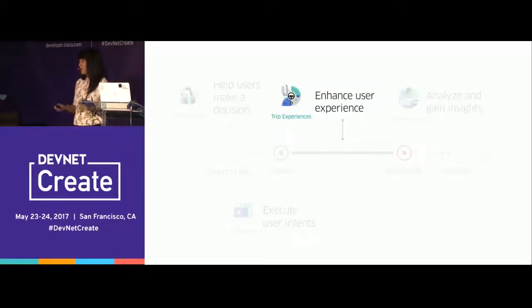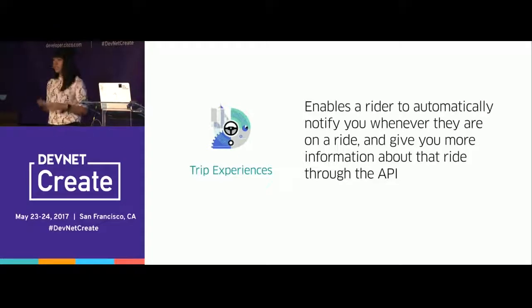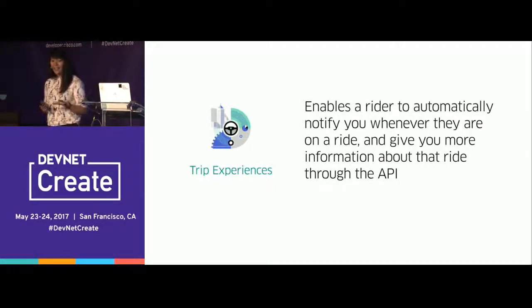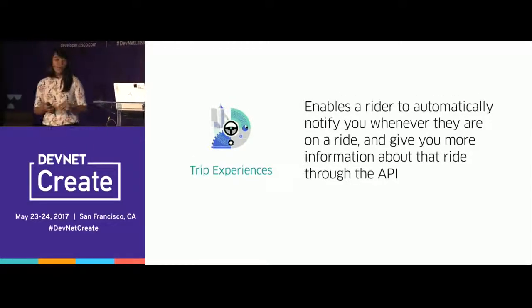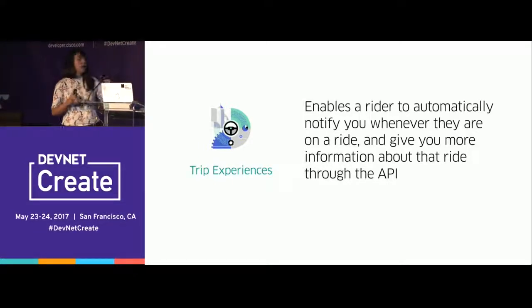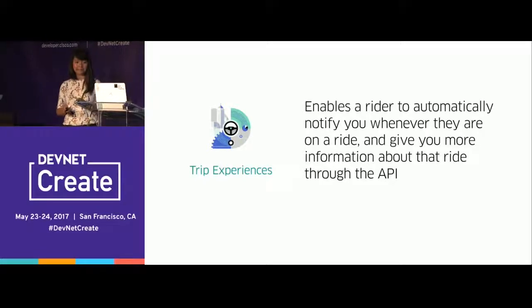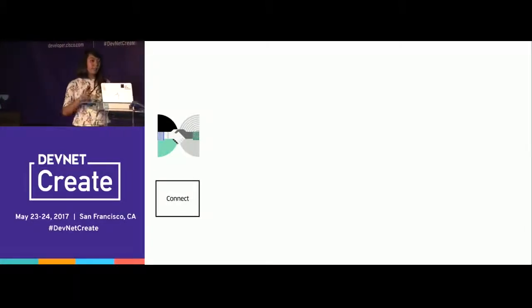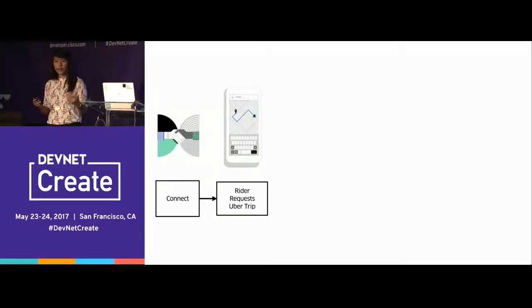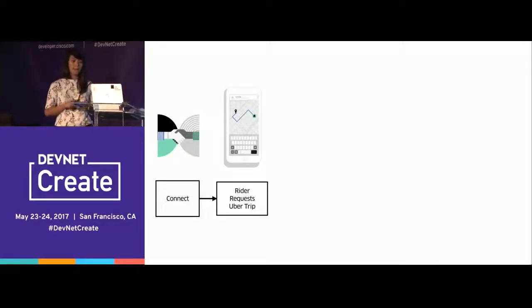Let's take a closer look at the trip experiences API to find out how we can change the way riders and drivers interact as they move and enhance their user experience. The trip experiences API enables the rider to automatically notify you whenever they are on a ride and gives you more information about that ride through the API. You can use this user data to provide something of value — something useful for the rider as they're riding.